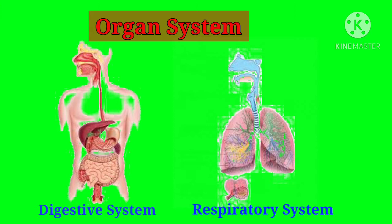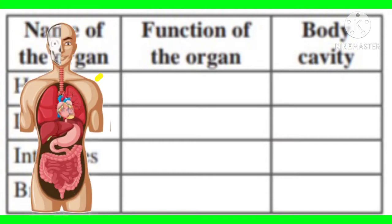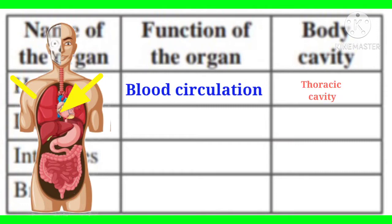In previous classes we have learnt about some organ systems, their functions, and their locations in our body. With the help of that knowledge, complete the following table. The table has three columns: name of the organ, function of the organ, and body cavity — the place where these organs are located inside the body. The first organ is the heart; its function is blood circulation, and it is located in the thoracic cavity.